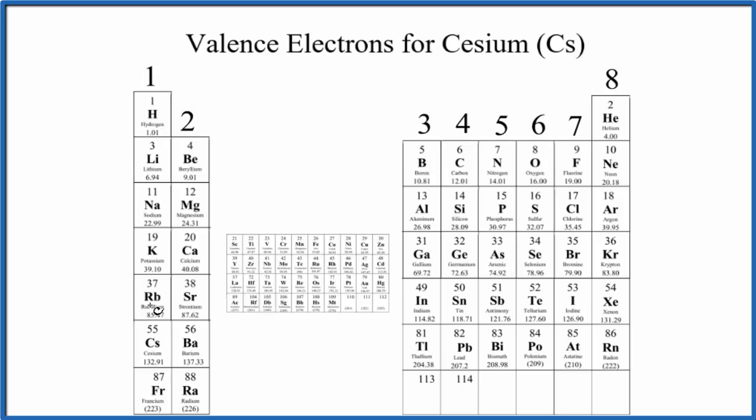Group 1, all of these have one valence electron. Group 2, they all have two valence electrons.